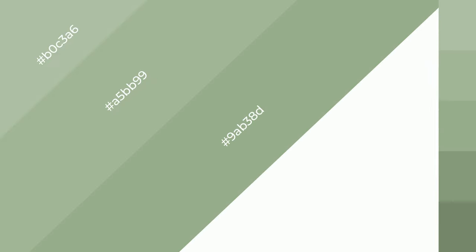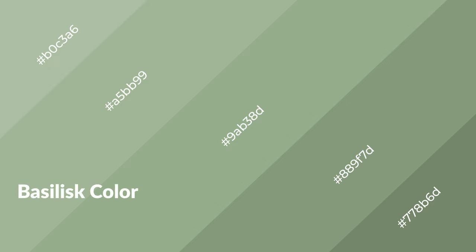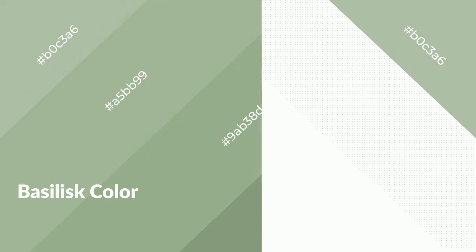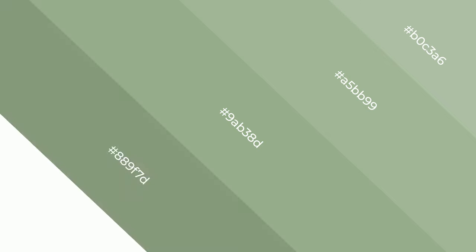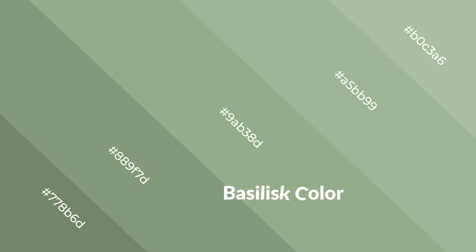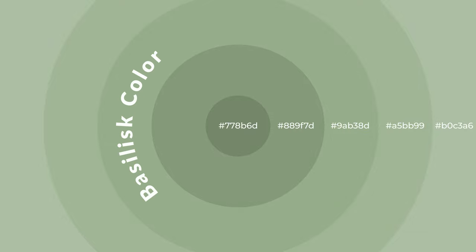Shades are used in patterns, 3D effects, and layers, and create depth and drama. Basilisk is a cool color and it emits calming, serene, soothing, refreshing, spacious, unwinding, peaceful, and relaxed emotions. Cool colors are like water, ice, sky, grass, soft, and snow. You can see them used in baby products.